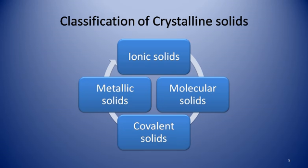Now, coming to the classification of crystalline solids — based on the nature of constituent particles and the binding forces present between them, crystalline solids are further divided into four categories: ionic solids, molecular solids, covalent solids, and metallic solids.